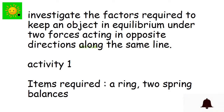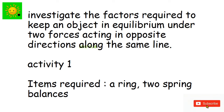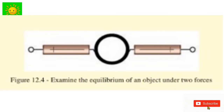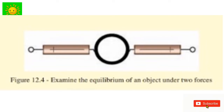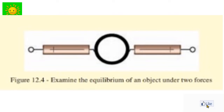In the first activity, we investigate the factors required to keep an object in equilibrium under two forces acting in opposite directions along the same line. We need a ring and two spring balances. Place the ring horizontally on the table and pull it with the two balances in opposite directions. By varying the pull, apply forces of different magnitudes. The ring stays at rest only when it is in equilibrium, and every time it is in equilibrium the readings of the two spring balances are equal.